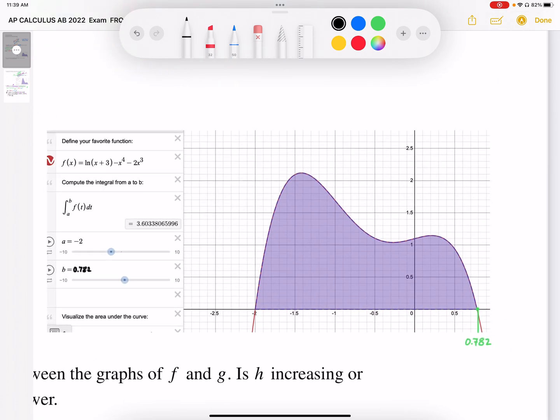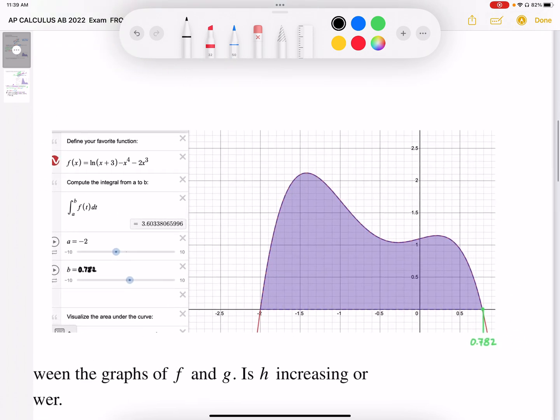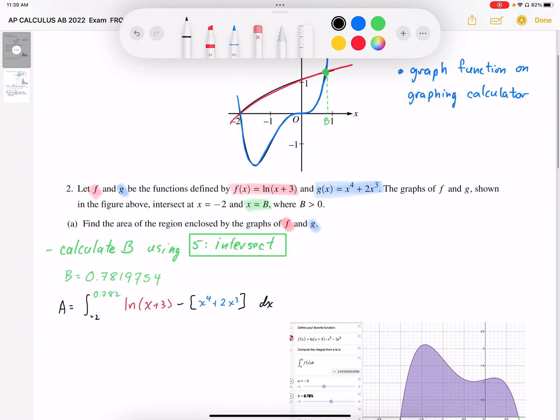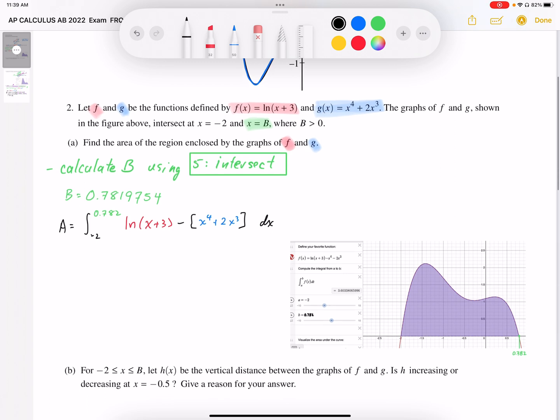So this is what the graph is going to look like. And when we integrate this area, that's going to be the area between these two curves. So integrating this on the graphing calculator, we're going to use the integrate function. That's under calc and then 7.